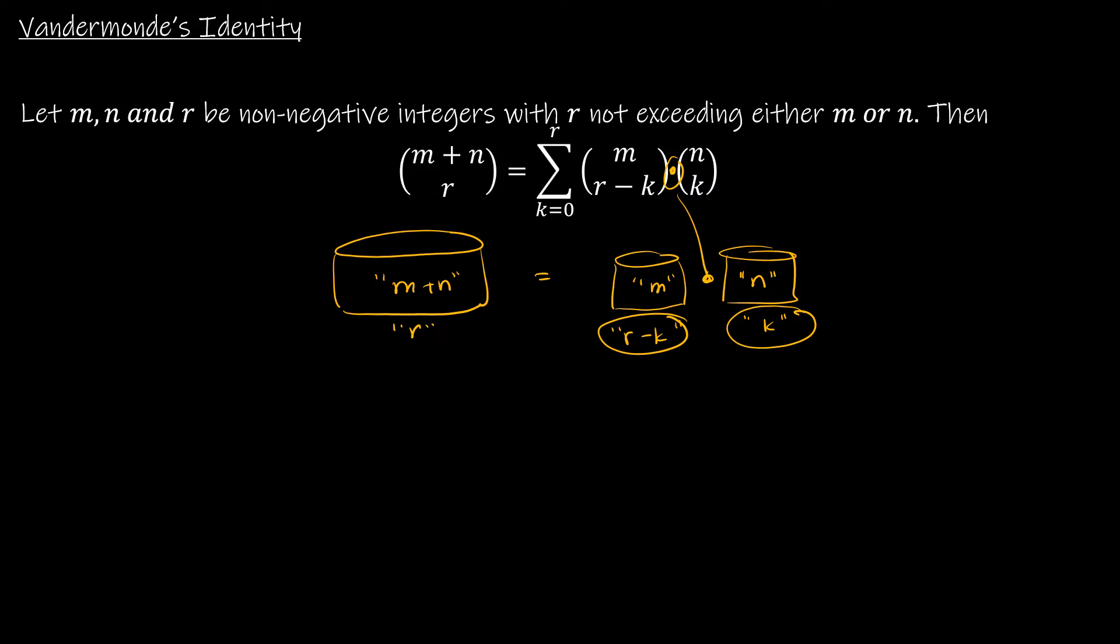Now is where the rule of sum comes into play because we haven't talked about the fact that this side has a summation and this side does not. And why does that happen? Well, the rule of sum comes into play because there's different ways that this can occur.